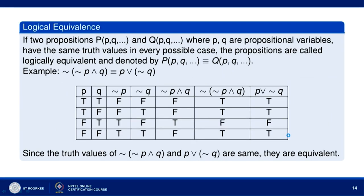Now, logical equivalence: if two propositions, using the same propositional variables P, Q and so on, have the same truth values in every possible case, the propositions are called logically equivalent, denoted by P equivalent to Q. For example, let us show that negation of (negation of P and Q) is logically equivalent to P or negation of Q.